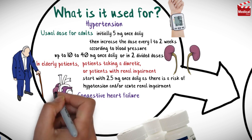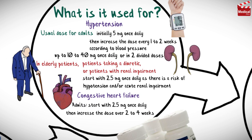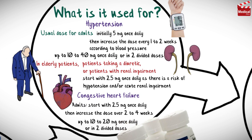The usual dose for congestive heart failure for adults is 2.5 mg once daily. Then increase the dose over 2 to 4 weeks up to 10 to 20 mg once daily or in two divided doses.